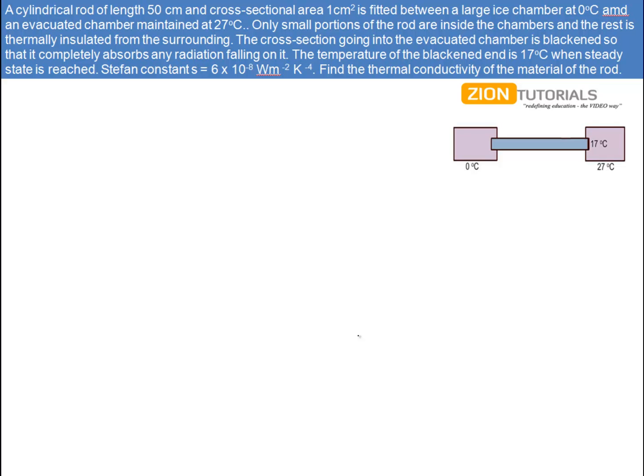A cylindrical rod of length 50 cm and cross-sectional area 1 cm² is fitted between a large ice chamber at 0 degrees and an evacuated chamber maintained at 27 degrees.